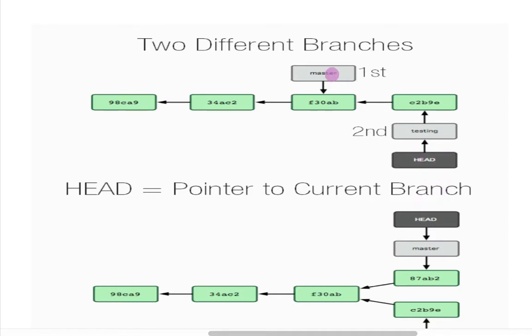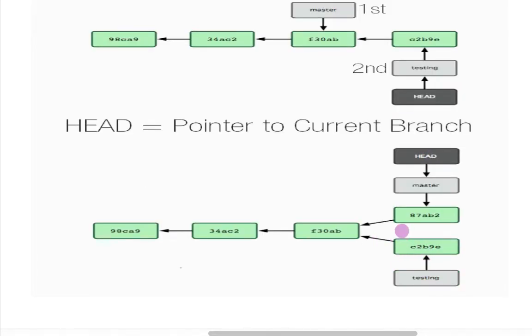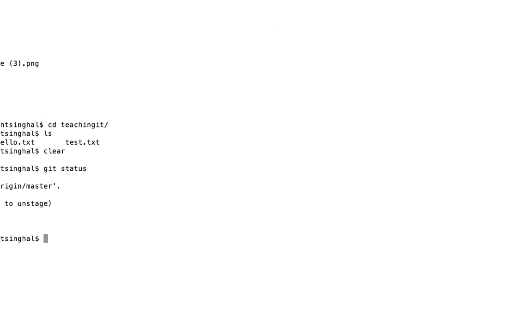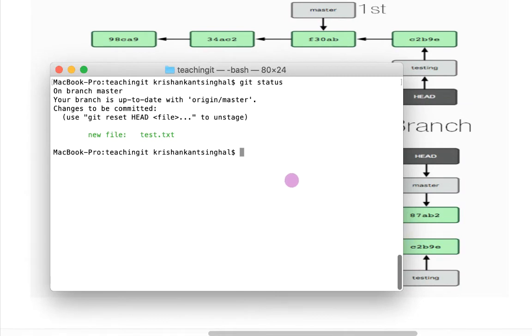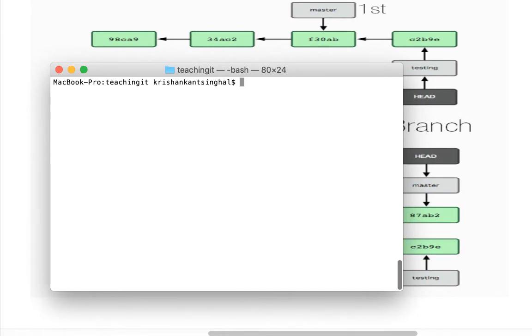There are two branches — master and testing. How do we know which branch we are on? HEAD gives that information. At any given time we will be on one branch — we might be on master or testing.